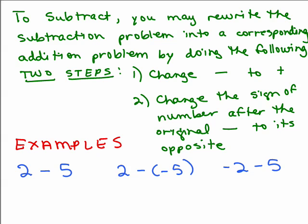Here's how we do it. To subtract, you may rewrite the subtraction problem into a corresponding addition problem by doing the following two steps. It doesn't mean you can just change subtraction to addition — there's something you have to do. One: change the subtraction sign to a plus sign, and change the sign of the number after the original subtraction sign to its opposite.